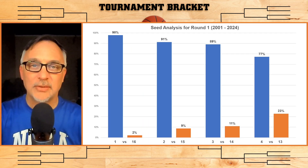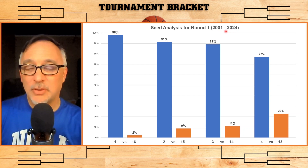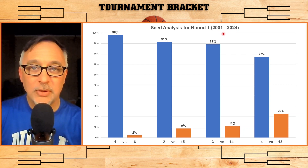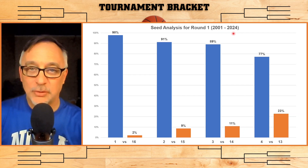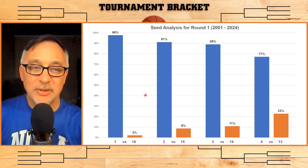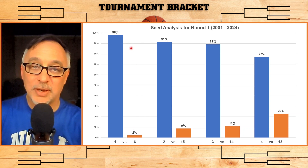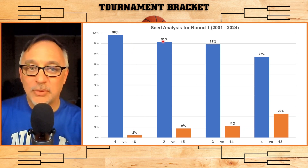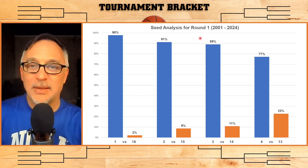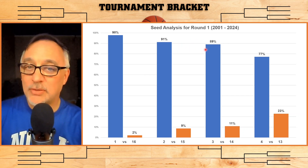Let's start off by looking at a seed analysis. I'm using data from 2001 to 2024 — and of course in the COVID year of 2020 there was no tournament — so this is 23 years of tournament game data. In those 23 years, the one seed has won all but two games against the 16 seed. So I'm not going to pick a 16 seed over a one seed — there's no way I'm picking against those odds. Similarly, the two seed and three seed hover around 90%, so I'm going to pick all my two seeds and all my three seeds to win in round one.